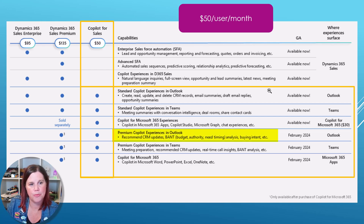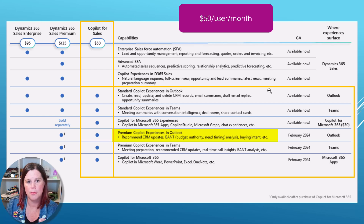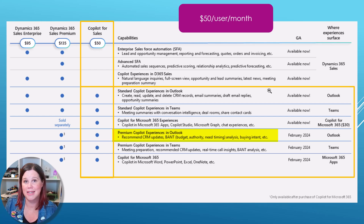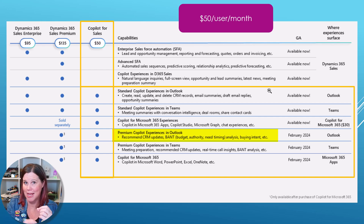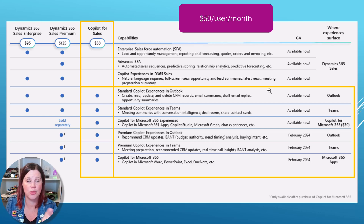For instance, the premium Copilot experiences in Outlook: the standard experience gives you create a contact, create an account, update those things, summarize the email thread, copy it to Dynamics — all great stuff. But the premium is now analyzing and doing cleverer, more sales-focused things: recommend CRM updates, recommend what data you should update, pull out budget, authority, need, and timing from the conversation thread. Same types of enhancements in Teams. We're only just seeing the start of this — as I said, this is a reinvention of the concept of CRM.